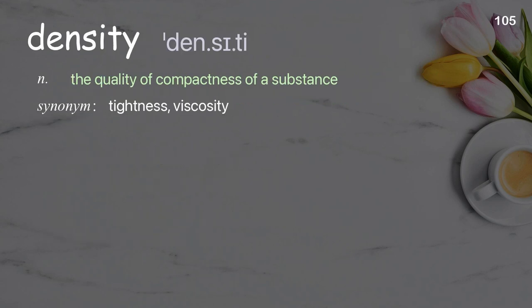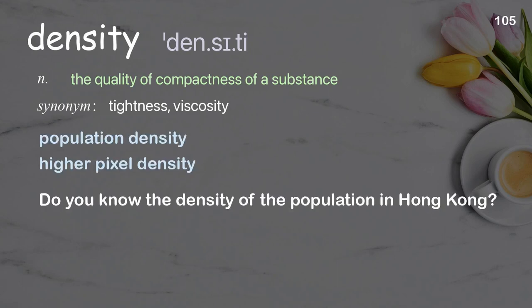Density: the quality of compactness of a substance. Examples: population density, higher pixel density. Do you know the density of the population in Hong Kong?